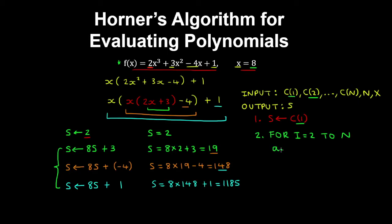In the for loop, s is equal to x — the value of x — multiplied by the previous result s, plus the coefficient i in the polynomial. Which we can see over here. And finally, we output the result.